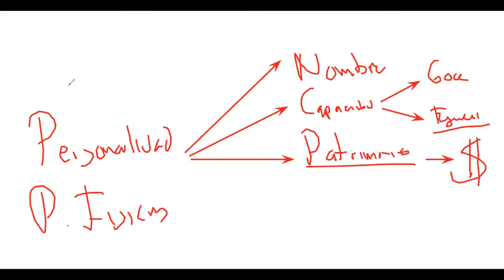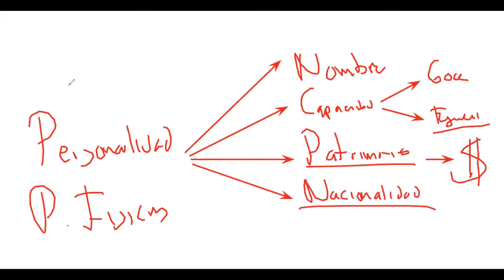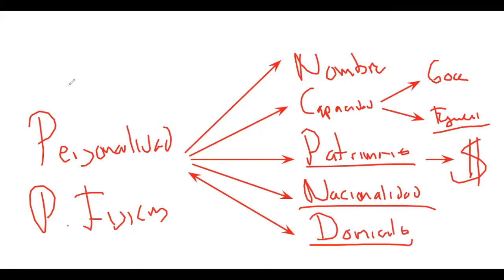También otro atributo es el tema de la nacionalidad: el vínculo jurídico que une a una persona con el Estado. El vínculo jurídico que une a Héctor Martínez Sandoval con el Estado, esa es su nacionalidad. Asimismo, tenemos el domicilio, que va a ser el lugar donde una persona va a cumplir con sus derechos y obligaciones.